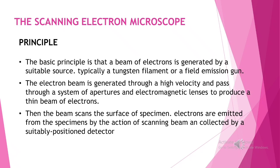First, we are going to look at the principle of a scanning electron microscope. The scanning electron microscope is an instrument that produces a largely magnified image by using electrons instead of light. A beam of electrons is produced at the top of the microscope by an electron gun. The electron beam follows a vertical path through the microscope, which is held within a vacuum. The beam travels through electromagnetic fields and lenses which focus the beam down towards the sample. Once the beam hits the sample, electrons and X-rays are ejected from the sample.